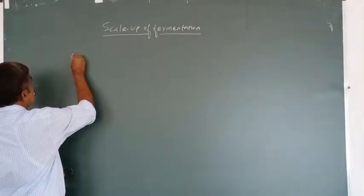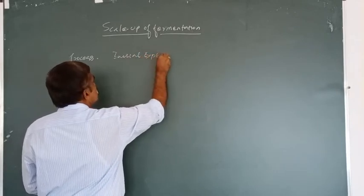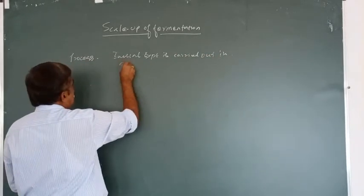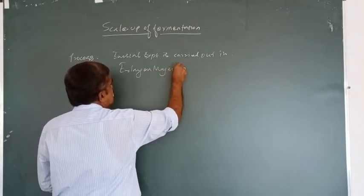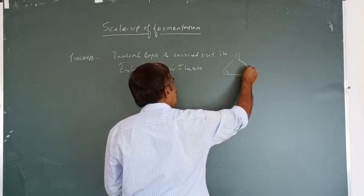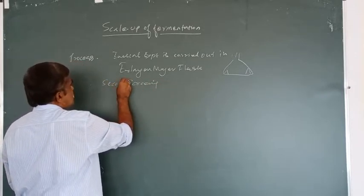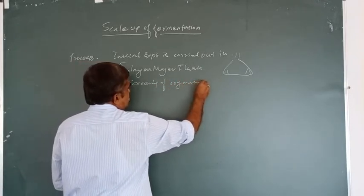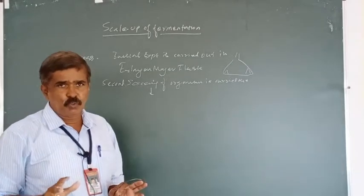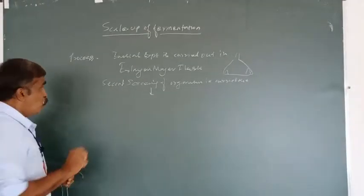The process of scale-up in the fermentation industry works as follows. The initial experiment is carried out in an Erlenmeyer flask. These flasks are used for secondary screening of the organism. The flask is kept on a rotary shaker where aeration and agitation are carried out, and the experiment is conducted under these conditions to obtain initial results.